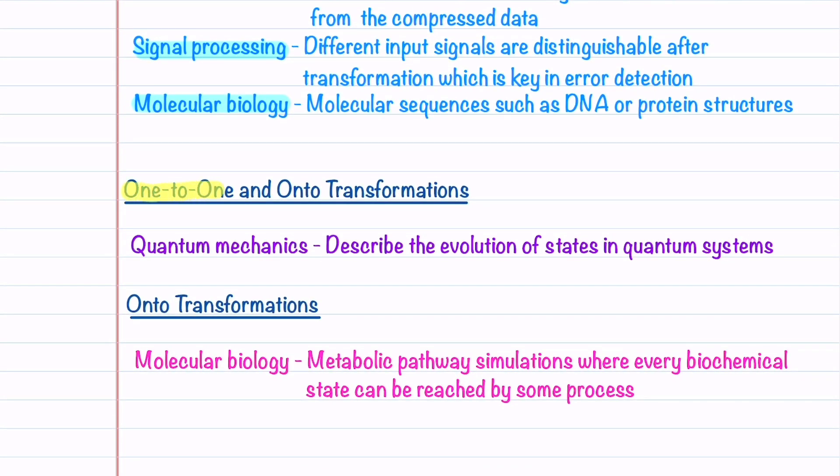One-to-one and onto transformations are used in quantum mechanics to describe the evolution of states in quantum systems. And lastly, onto transformations are used in molecular biology to ensure that in metabolic pathway simulations, every biochemical state can be reached by some process.